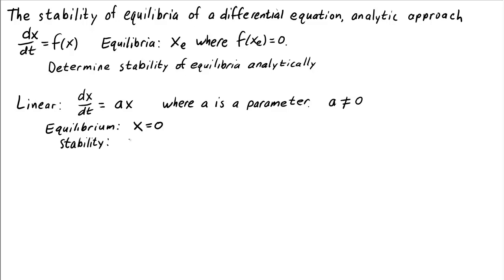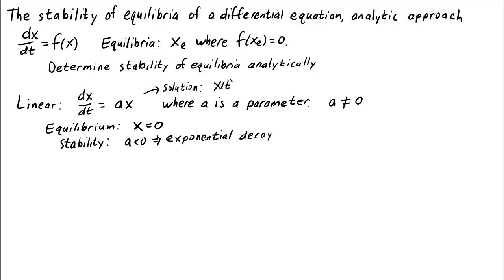What about the stability of that equilibrium? If a is less than 0, we have exponential decay. The solution to this linear differential equation is x(t) equals some constant times e to the at. If a is negative, x(t) decays towards 0, which means the equilibrium is stable.